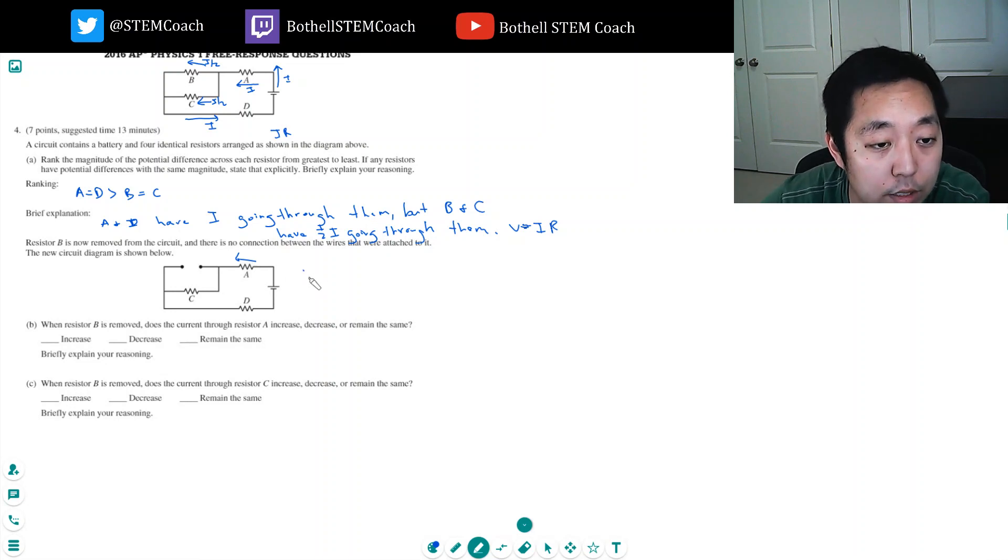Hence the total current, I equals V over R. If R has gone up, then I goes down. So decrease.